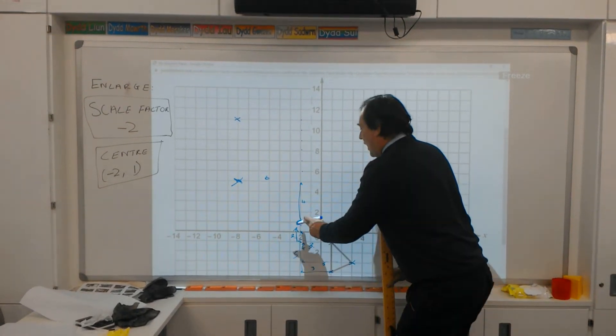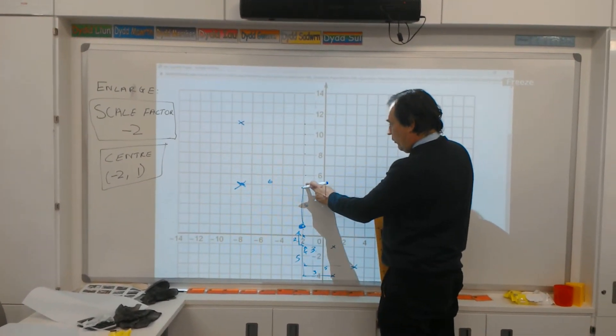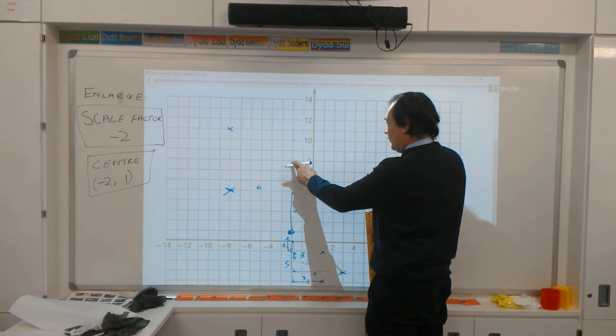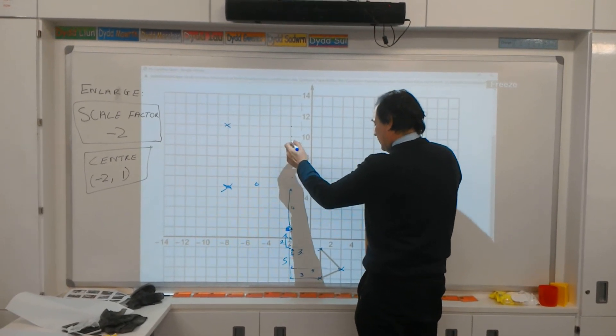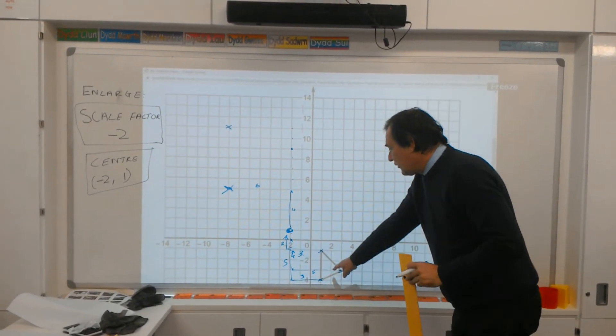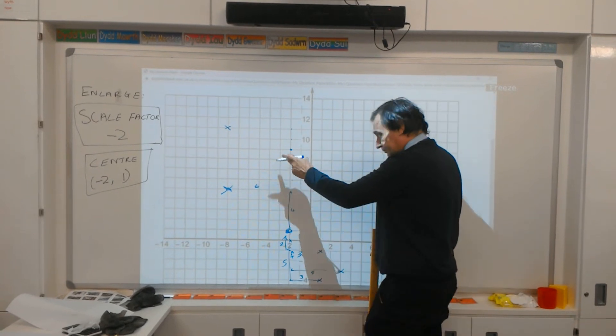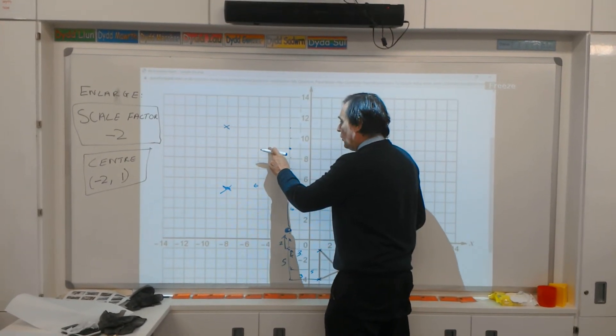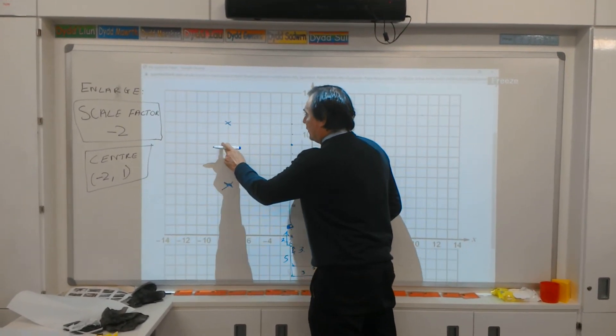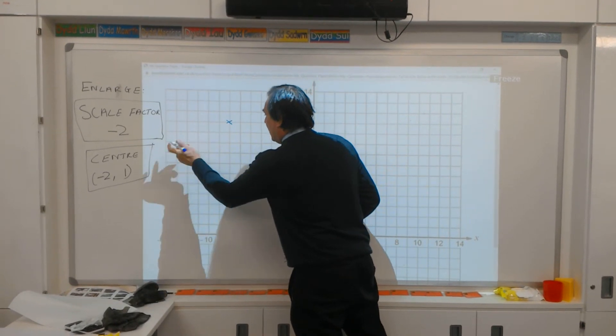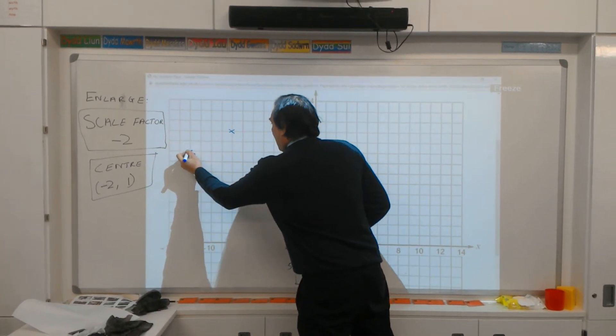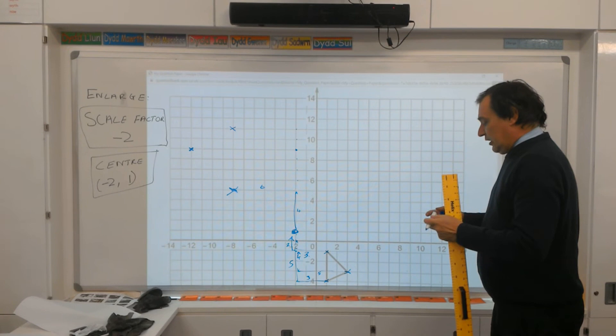So that's going to be, I've got 4 there. 5, 6, 7, 8. And to get across, I have to go 5, so I've got to go 10 across. 1, 2, 3, 4, 5, 6, 7, 8, 9, 10. And so that's the third side of my projected triangle.